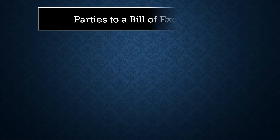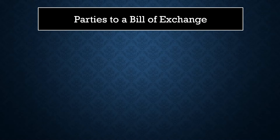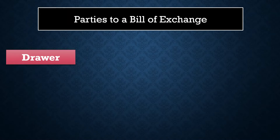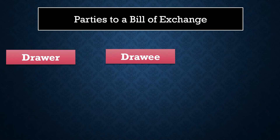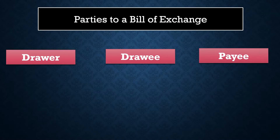Now we will see the parties to a bill of exchange. The first person is the drawer. He is the person who is giving order to a particular person called drawee for making payment to a particular person called payee. The drawer makes the document and gives order to the drawee to pay money to the payee. These three people are the primary parties.